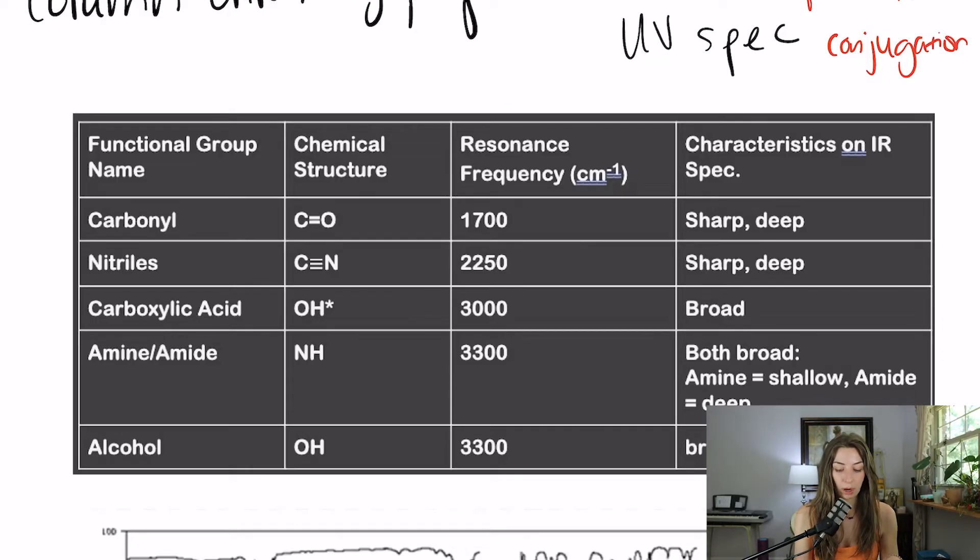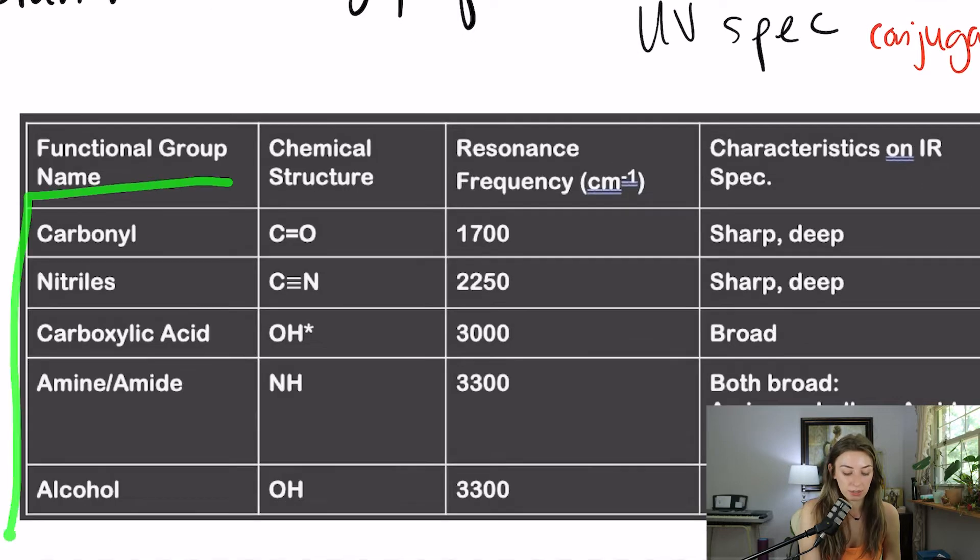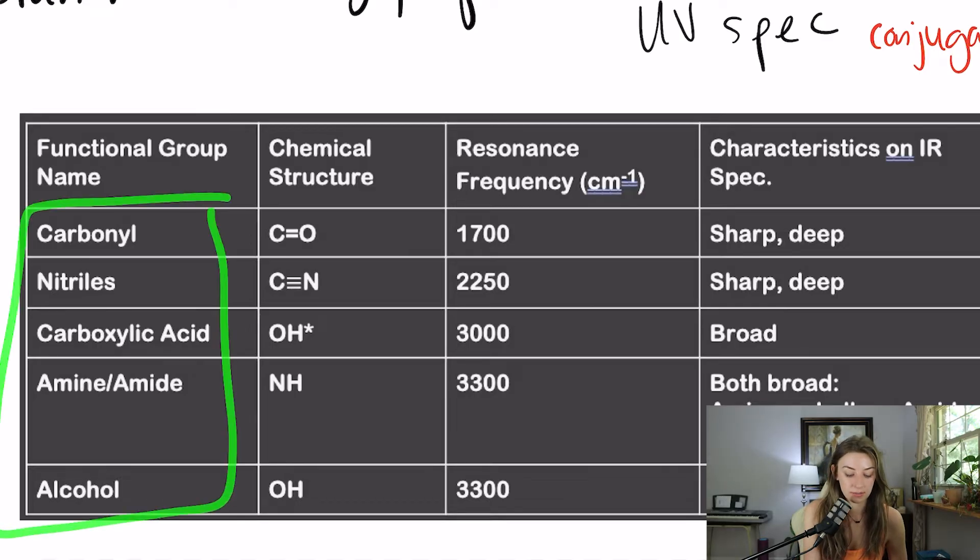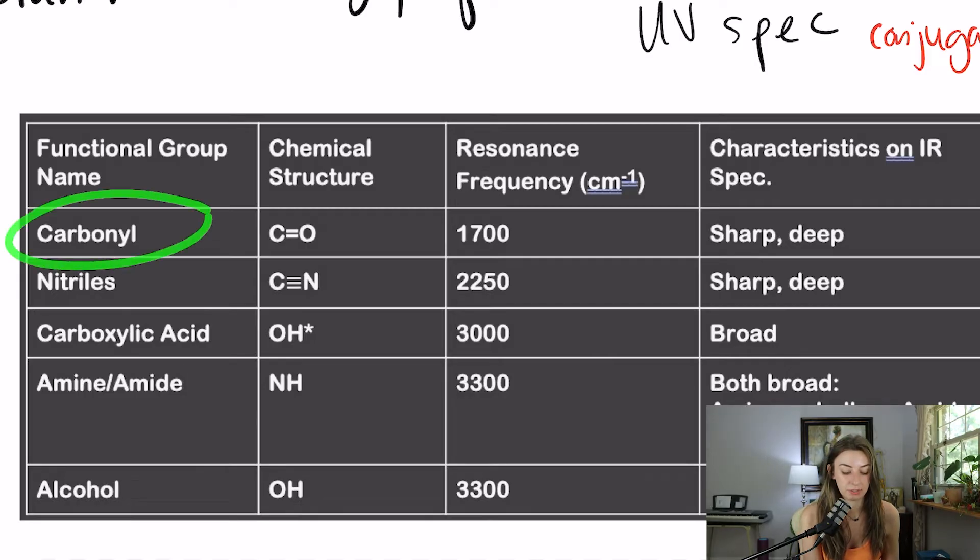I think this makes more sense when you get into it. So I pulled this table from our high yield book. These are the most common functional groups that are tested on the MCAT. This is not at all an exhaustive list, but most likely 98% of the functional groups that you see on the MCAT that are tested via IR are going to be these.